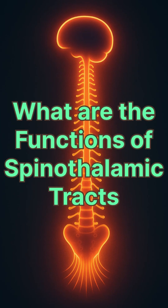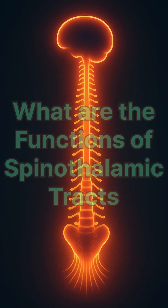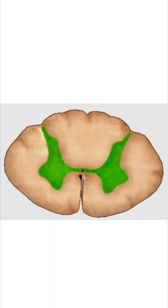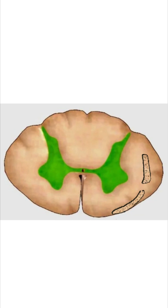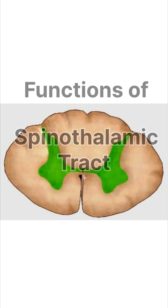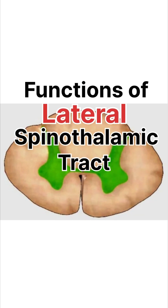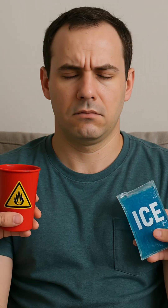What are the functions of spinothalamic tracts? In the cross section of spinal cord, there are anterior and lateral spinothalamic tracts present in the white columns. The lateral spinothalamic tract functions are: it is responsible to recognize hot and cold objects placed in contact with the skin.